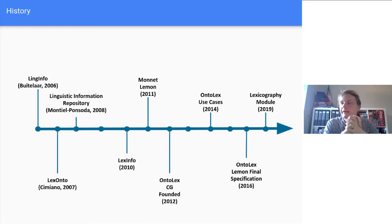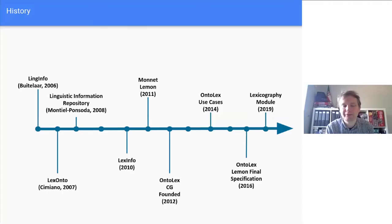We felt this was not a very good way to develop a model without lots of input. So we founded an open community group called the Ontolex Community Group, which is still going to this day and still very active. This group worked on building the community and really finalizing the model. That took a while — it took four years to get to the final specification of the core model. In 2016 we released the final specification, and we continue to extend it. A lexicography module was released in 2019, and there are a few more modules in the pipeline, so it's still under active development.